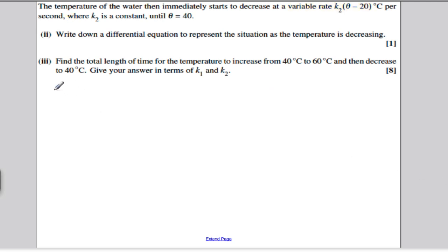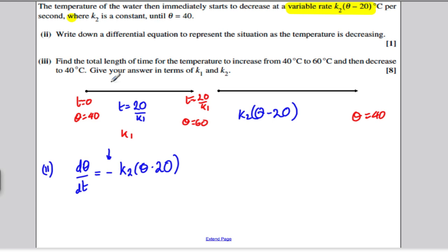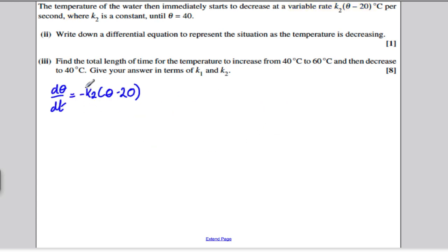So moving on to part III, remember what we said. We said that d theta by dt was equal to minus negative K2 theta minus 20. Now going back to our diagram, the question in part III is asking us for the total time from here to here in terms of K1 and K2. We've got this bit. How are we going to get this bit? Well, we will if we solve this differential equation here for t and try and find t. So we're going to do that by separating variables and integrating.